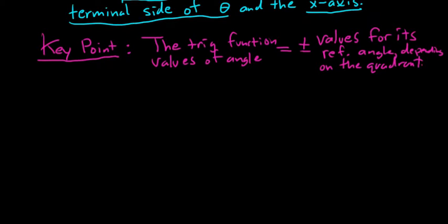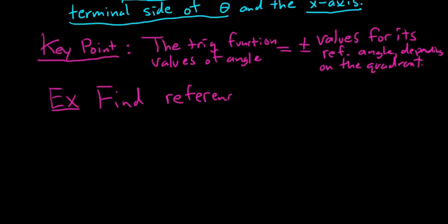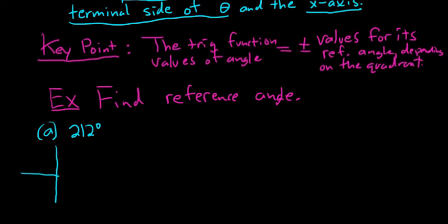Let's do some examples of finding reference angles. Find the reference angle for 212 degrees. I like to draw a little picture first. 212 is past 180, so the terminal side lands in the third quadrant — right about here. That's 212 degrees.